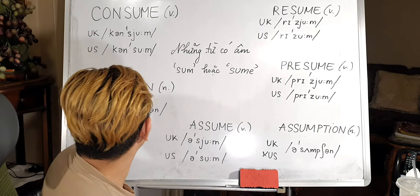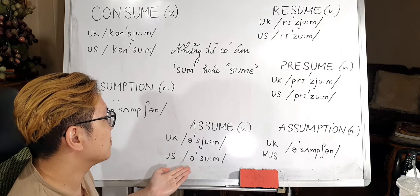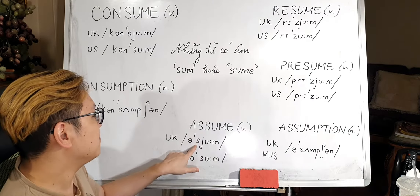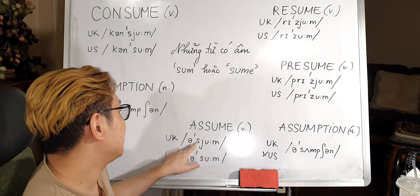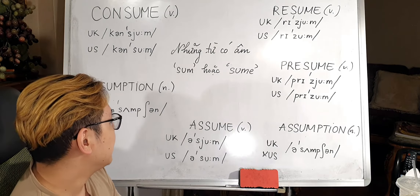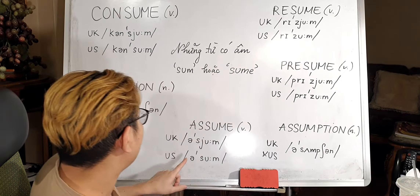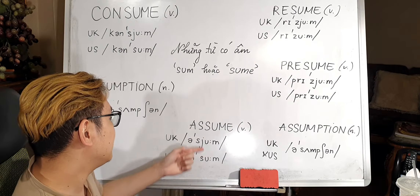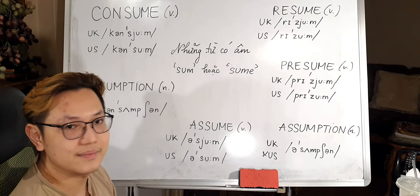Moving on to a few more words: 'assume' and 'presume'. Notice it's an S sound for 'assume', but a Z sound for 'presume'. Các bạn cẩn thận: âm S với 'assume', và âm Z với 'presume'. But they work in a very similar way to 'consume'. You might have seen the similarity between these verbs already.